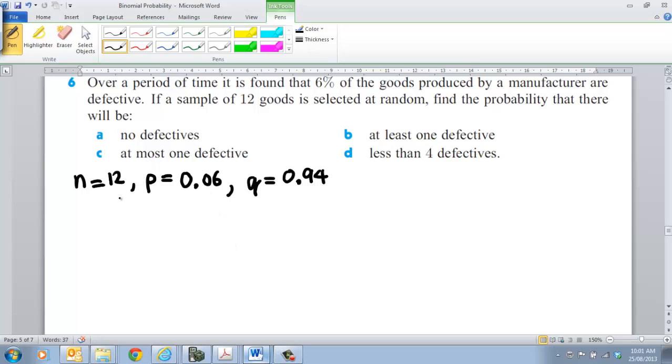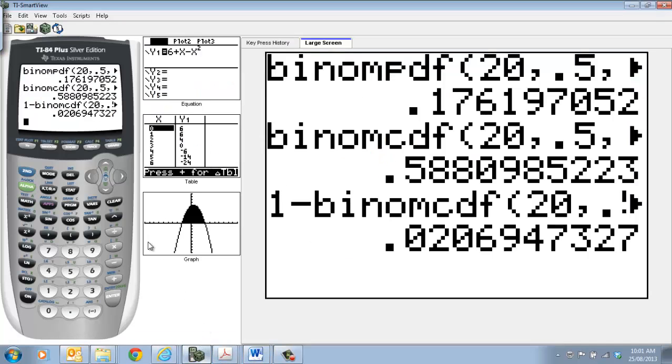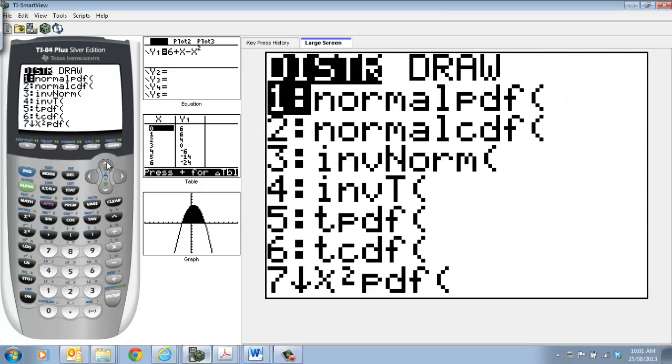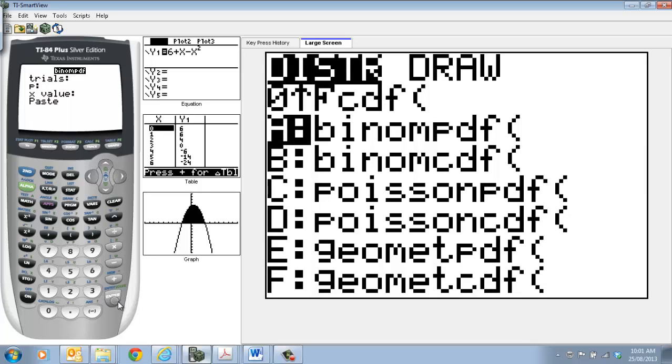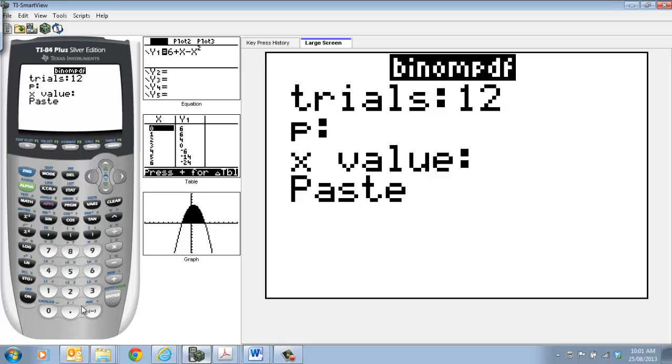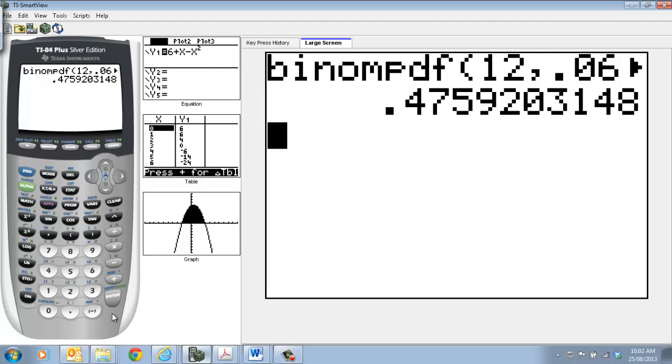So going through these, part A: no defectives. So probability that X is equal to 0. That's equal to binomial PDF. So that will be, how many goods are there? There are 12 goods that have been tested. We've got a 0.06% chance that they're going to be defective, and we're looking for zero of them. So you go to the calculator. Distribution, and we're doing a binomial PDF. We have to go up there. Then basically putting in 12 is our value there, 0.06 is our probability of a defective appliance, and then zero looking at that value. So we've got a 47.59% chance.